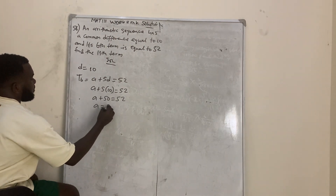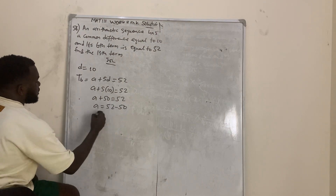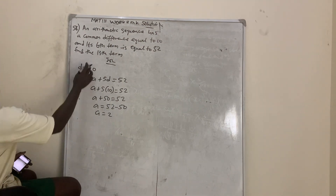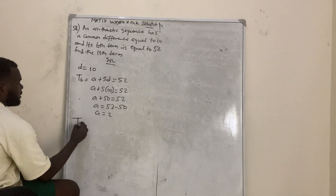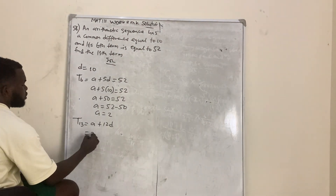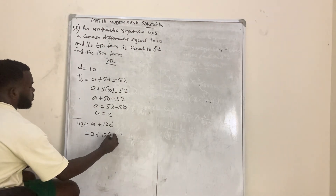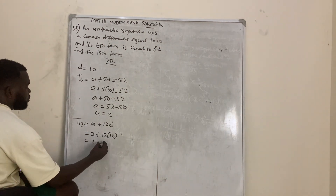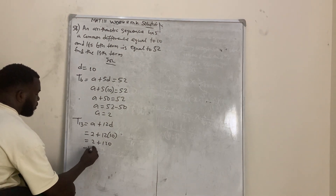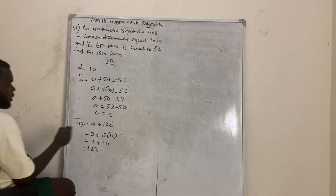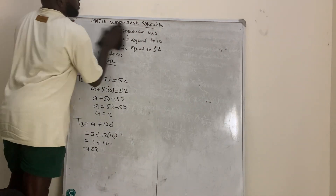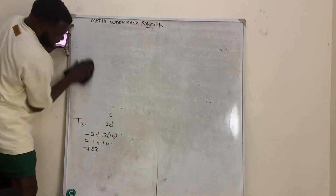So a is equal to 52 minus 50, which means a is equal to 2. Once you have a and d, find t13: t13 is a plus 12d, which is 2 plus 12 times 10, equals 2 plus 120, which is 122. That is the answer.